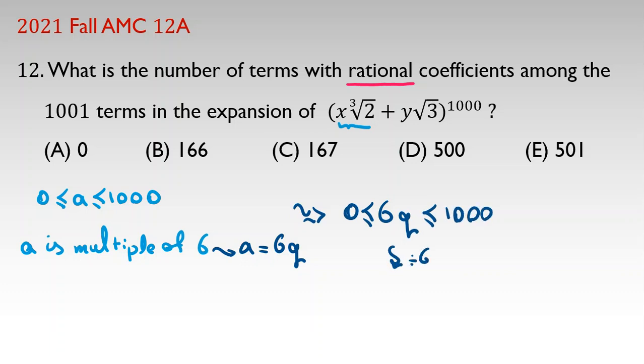So, if we divide by 6, q will be at least 0 and less than or equal to 1000 over 6, which is 146, 46.6 and so on. Because q is integer, because a is integer, so q can be between 0 and 166.